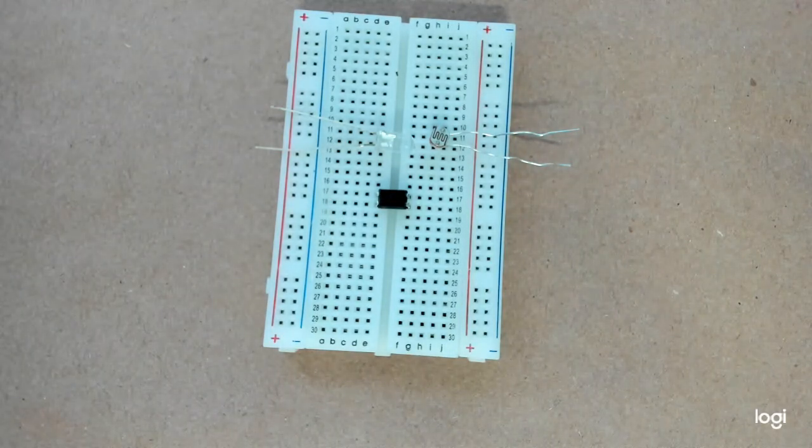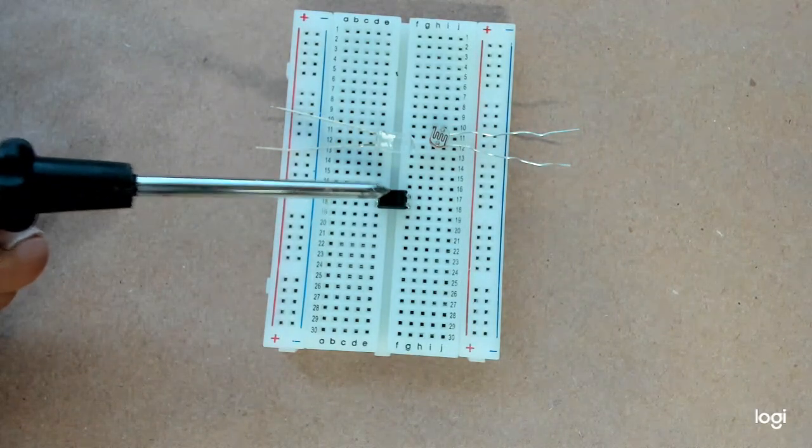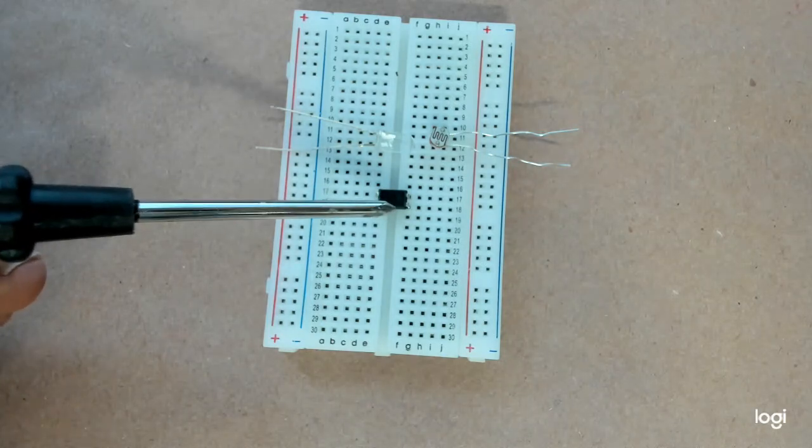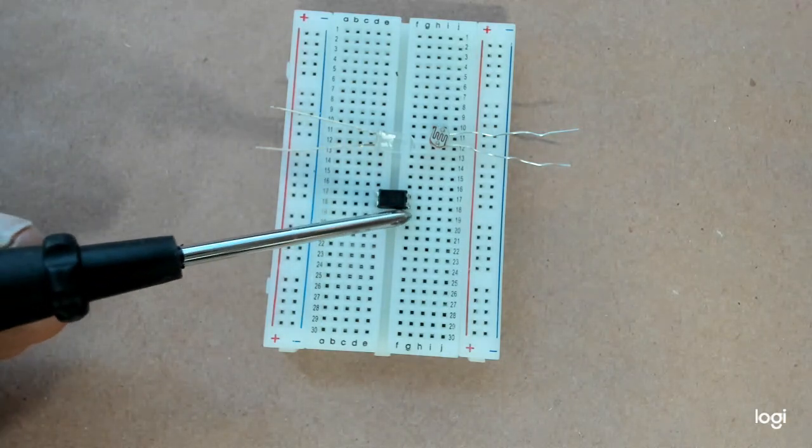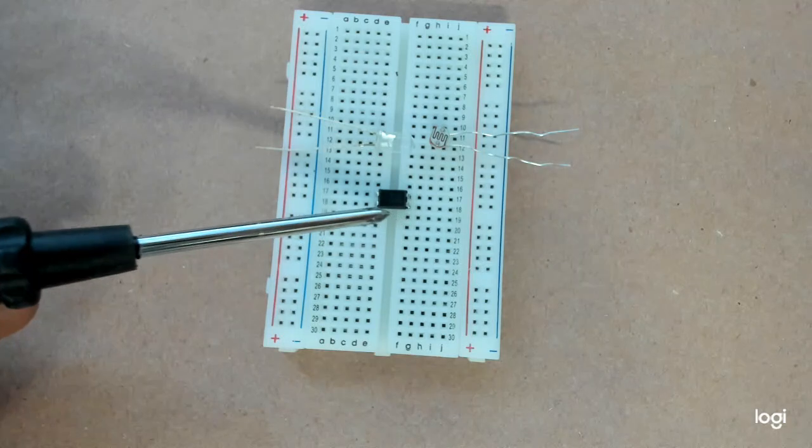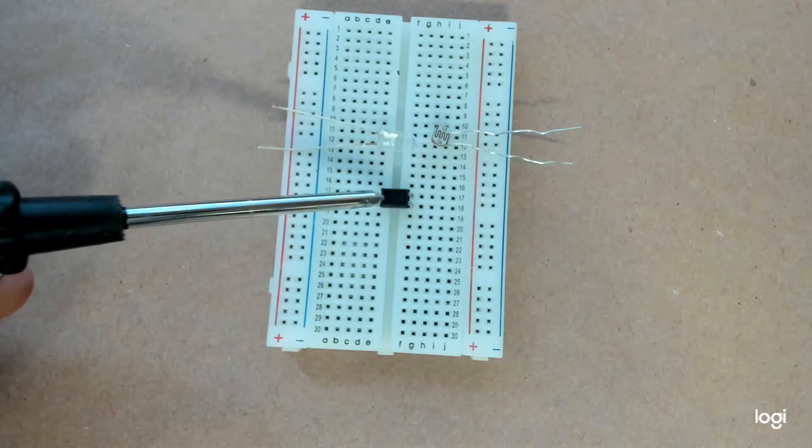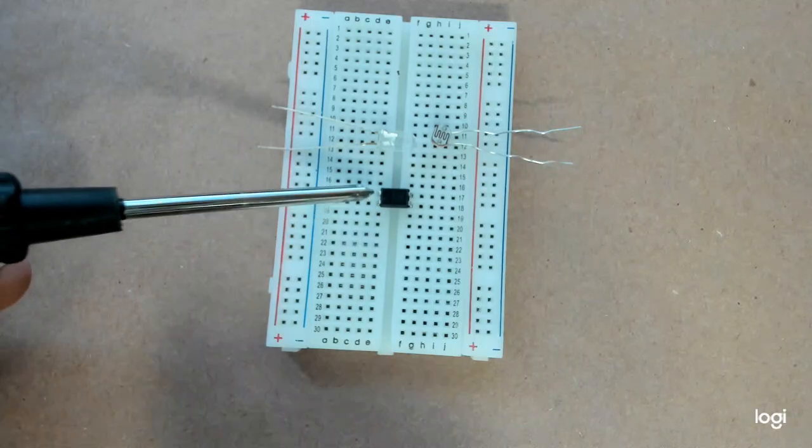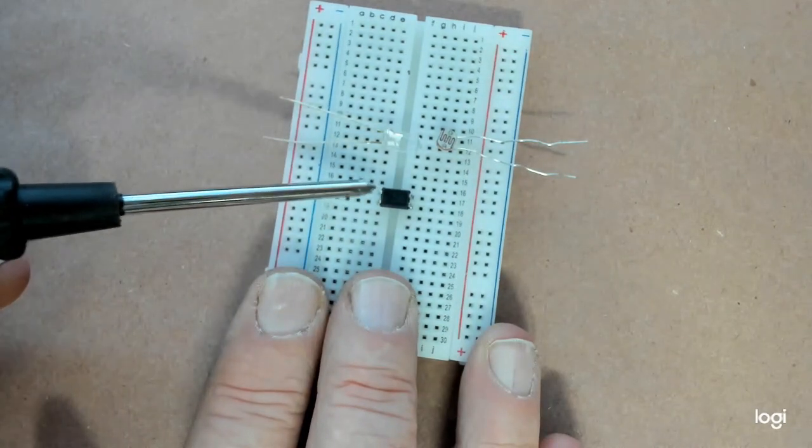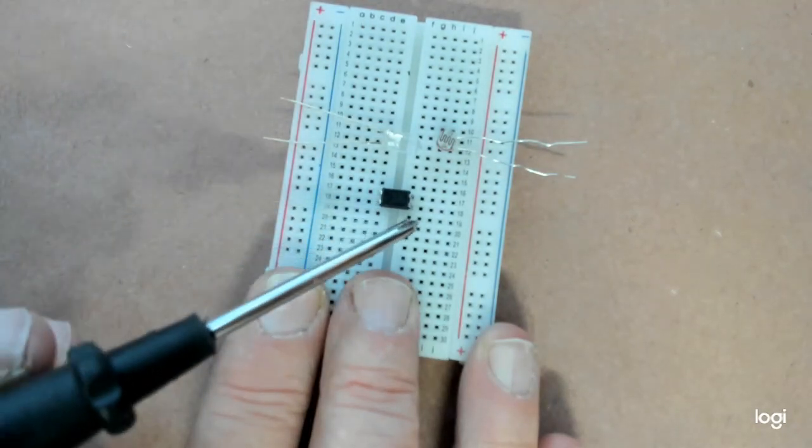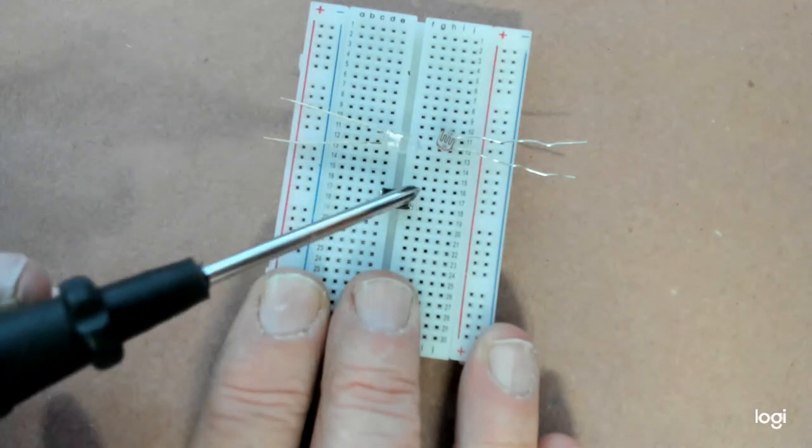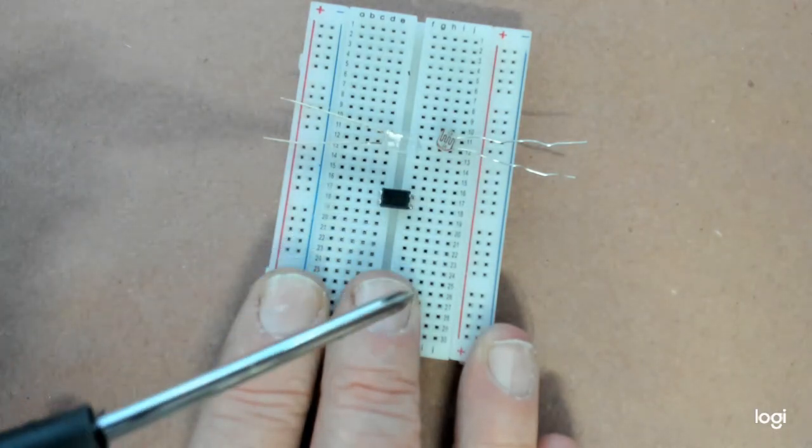Because what happens is, is this chip right here, there is absolutely no physical connection between pins on the left or right. Right up here at the top, there's a little dot. Okay. And that is pin one. Below it is pin two. Right here on the bottom is pin three. And the top over here is pin four.